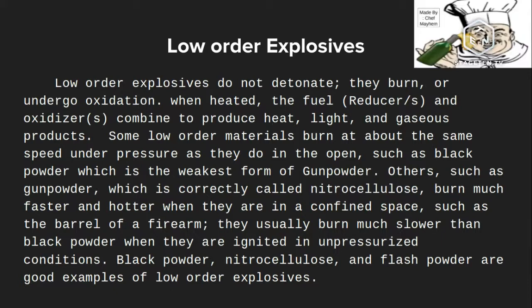Others, such as gunpowder — correctly called nitrocellulose — burn much faster and hotter when confined in space. This is because heat is directly proportional to pressure, and heat causes the chemical reaction to increase. So more pressure equals more heat, which equals a faster chemical reaction.